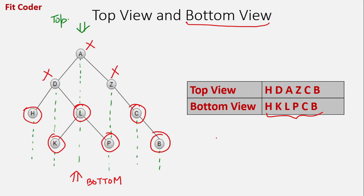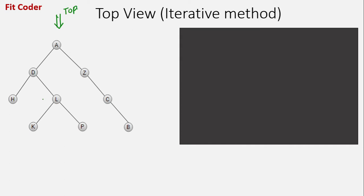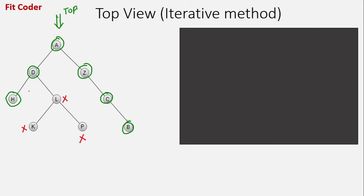For this binary tree, the top view will consist of nodes H, D, A, Z, C, and B. K will be hidden by node D, L will be hidden by node A, and P will be hidden by node Z. Let's first try to understand the logic behind this algorithm.